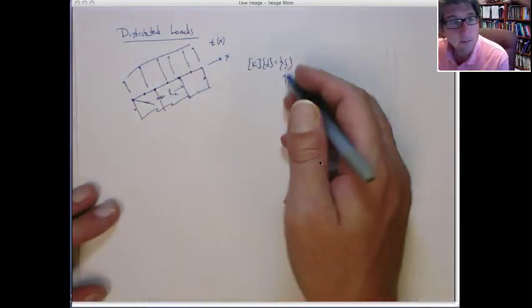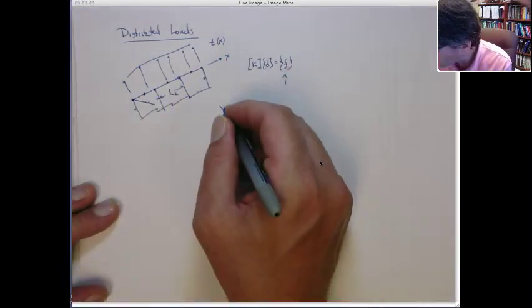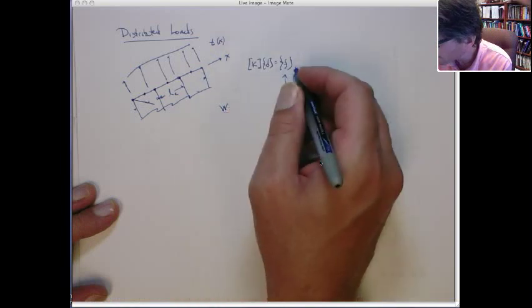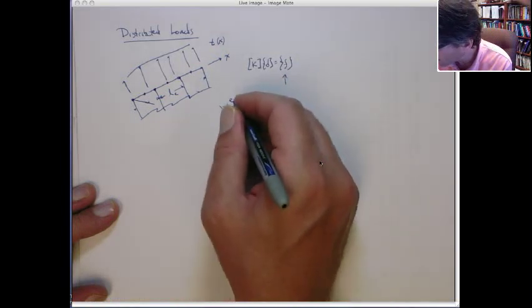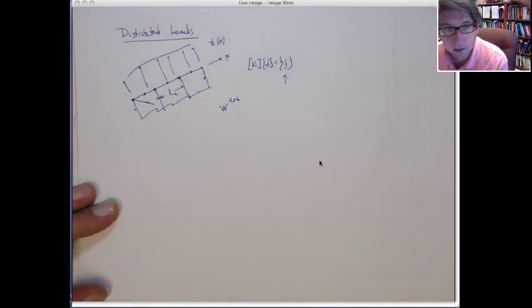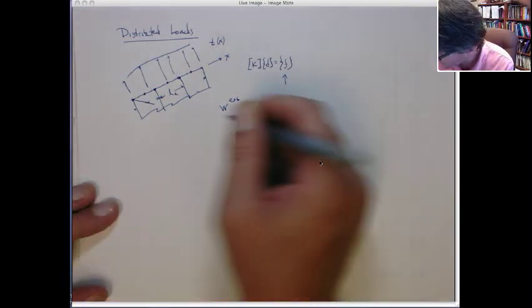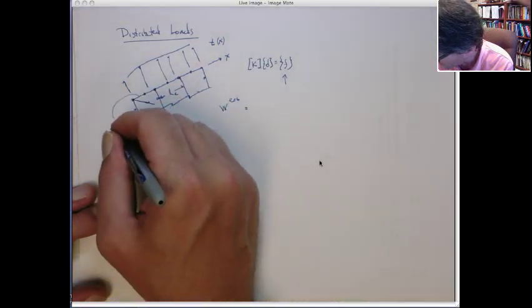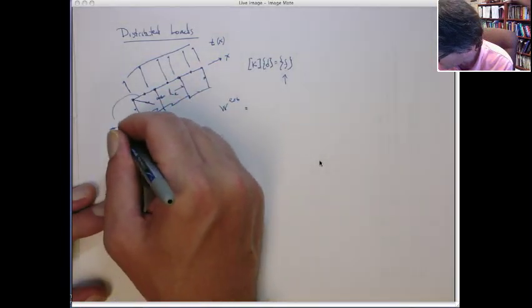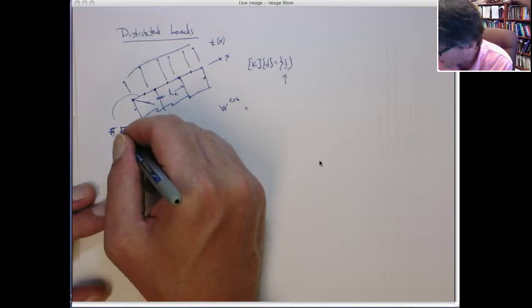So where does this come from? Well, last time we derived this from these equations from a minimization of energy. So let's just first write the external work done by these forces. So let's call this boundary gamma T.